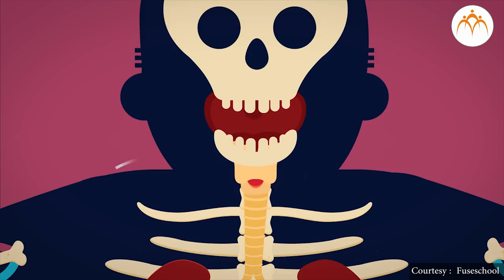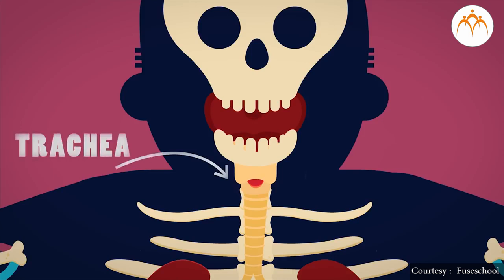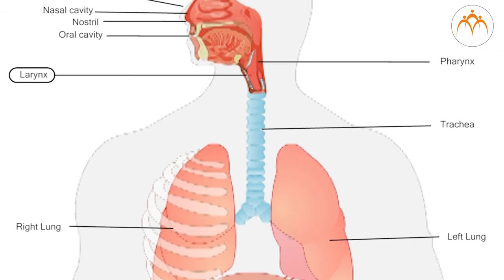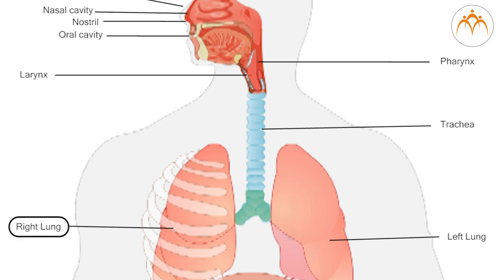The windpipe is also called trachea. Trachea is swollen at the beginning due to the sound box or larynx. Usually our windpipe is 12 cm long. In the thorax or chest region of the body, trachea produces two branches. One branch enters the right lung and the other into the left lung.